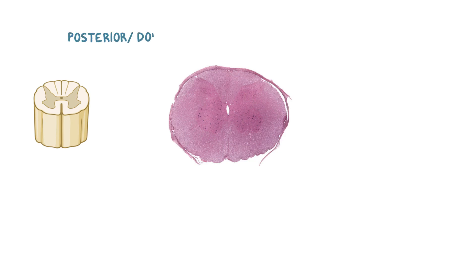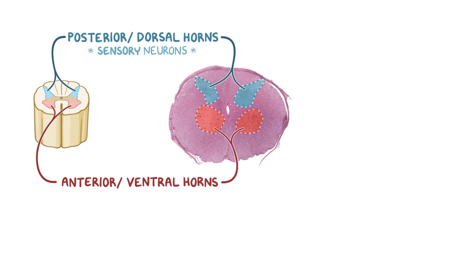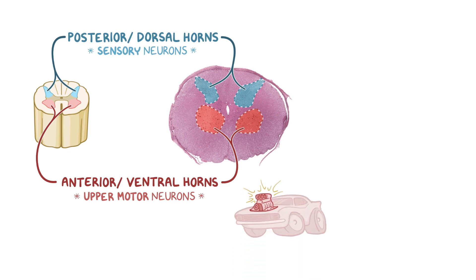In this low-power image, we can see the spinal cord's two posterior or dorsal horns closer to the top of the image, and two anterior or ventral horns at the bottom. The dorsal horns contain mostly sensory neurons, and the anterior horns contain mostly upper motor neurons. A simple way of remembering the location of the motor neurons is to remember that most cars also have their motors in the front or anterior part of the car.